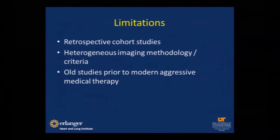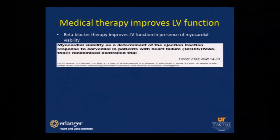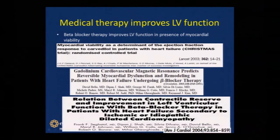Using this older data to justify viability testing is premature. We know there is lots of data suggesting the benefit of medical therapy in improving LV function — even with just beta blockers alone, not talking about RAS inhibition. A paper in the Lancet used both SPECT and echo-based viability to show that patients with viable myocardium using beta blockers alone improved ejection fraction. The same findings were seen using cardiac MRI viability and SPECT alone — high-intensity medical therapy in the presence of viable myocardium gives functional improvement.